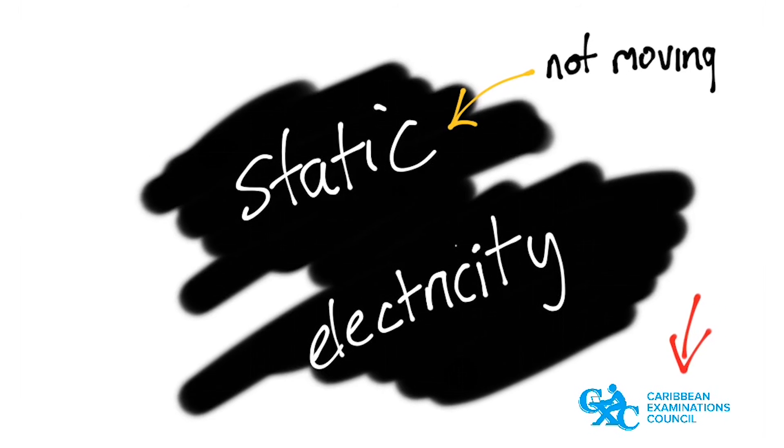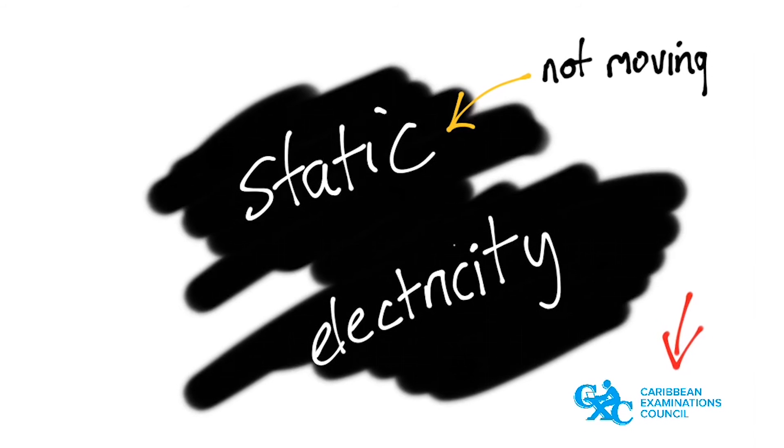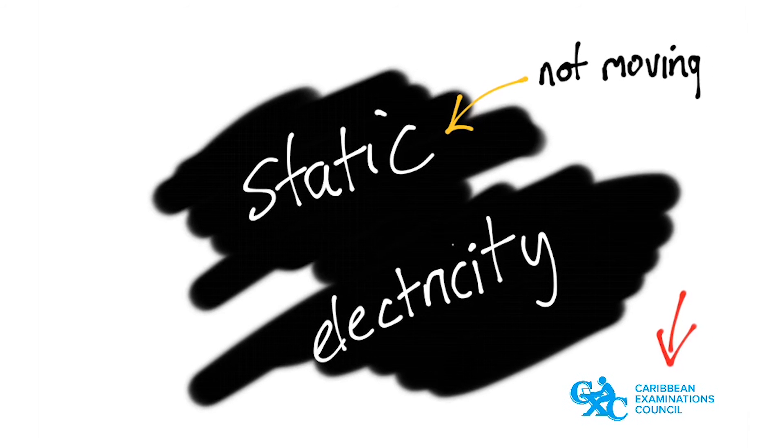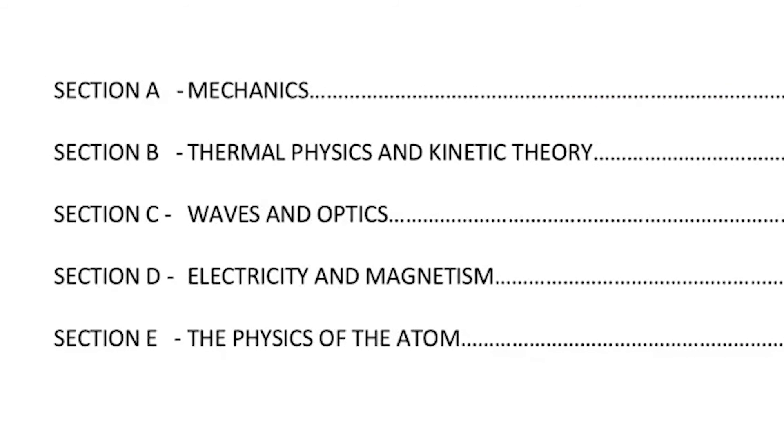First thing you should know about static electricity is static means not moving. That's what that word means. So we're dealing with electricity that's not moving. It's like the buildup of charges, but not the flow of charges continuously. But technically the electrons still do move. So it's a kind of technical thing, but I guess you'll get the hang of it.